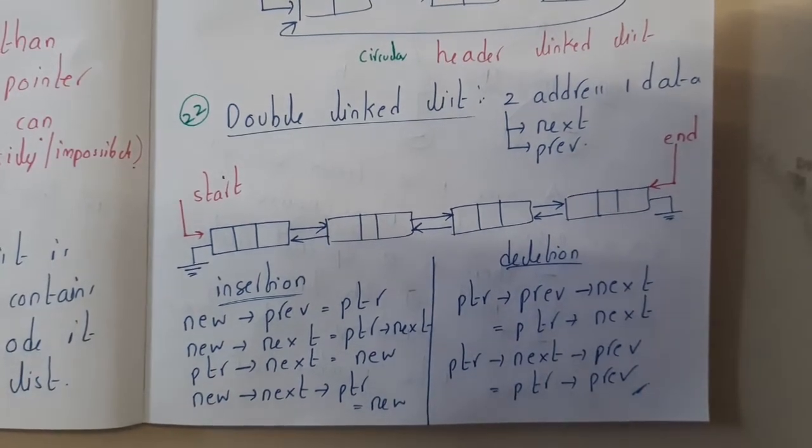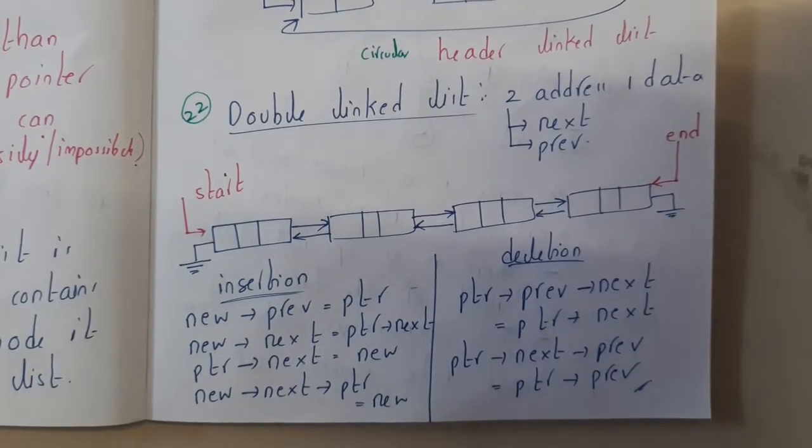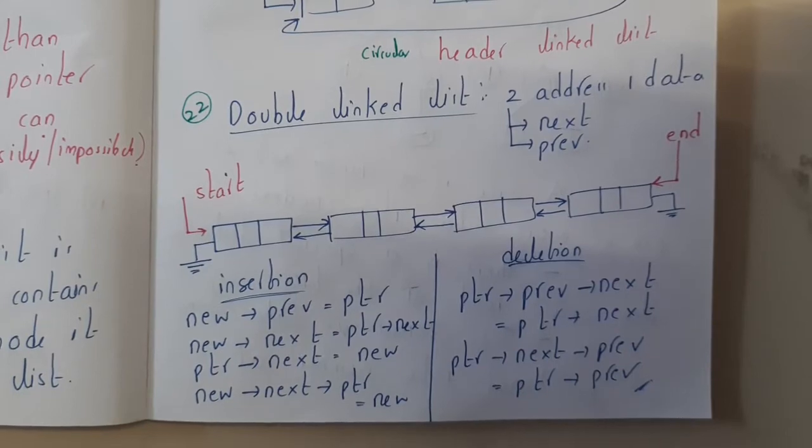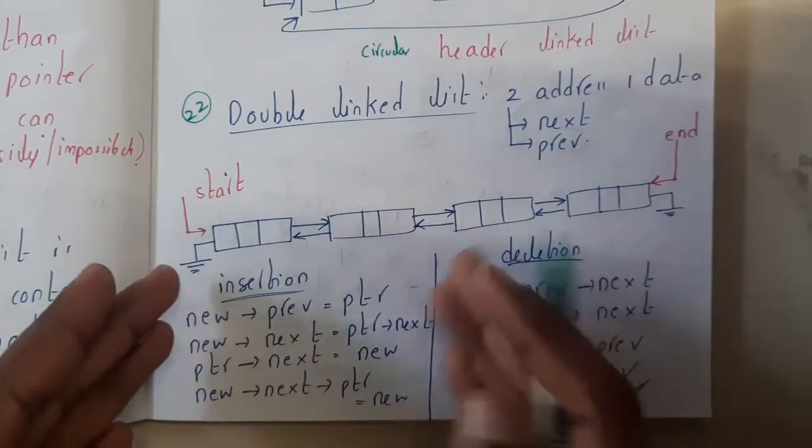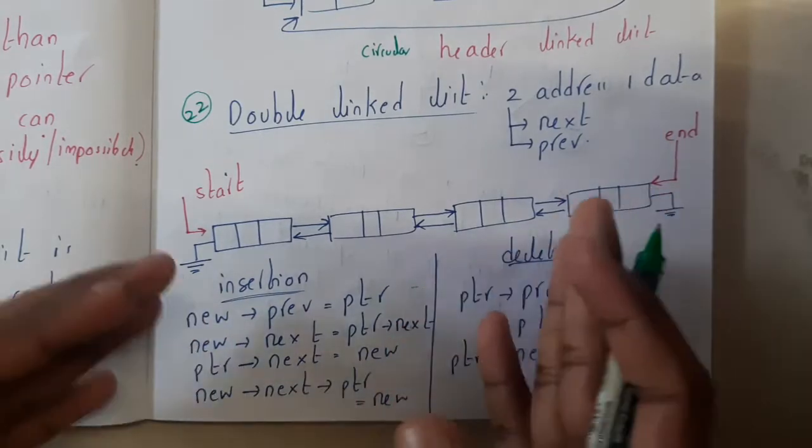Hello guys, we are back to the next lecture. In this lecture, let us go through the concept of double linked list. So basically, doubly linked list is just a small modification to the normal traditional singly linked list.